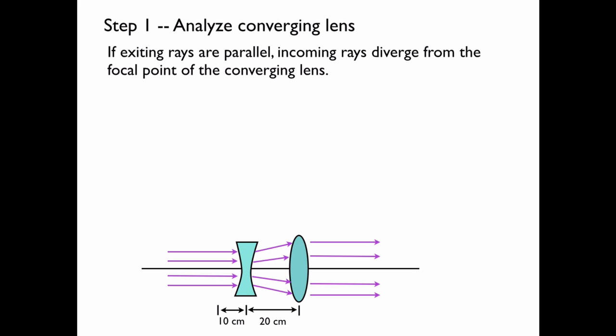If we forget about the diverging lens for a second and imagine placing an object at the focal point of the converging lens to the left, then we will have exactly the ray diagram shown below. Light rays will come in and they will come out parallel.